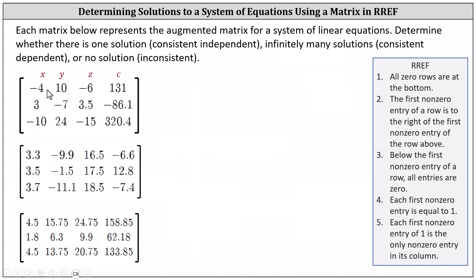For example, this first row represents the equation negative four x plus 10 y minus six z equals 131.